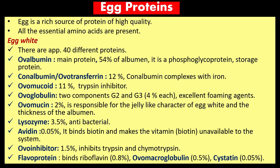Egg is a rich source of high-quality protein, with all essential amino acids present. In egg white there are approximately 40 different proteins: ovalbumin, conalbumin, ovotransferrin, ovomucoid, ovoglobulin, ovomucin, lysozyme, avidin, ovoinhibitor, and flavoproteins.